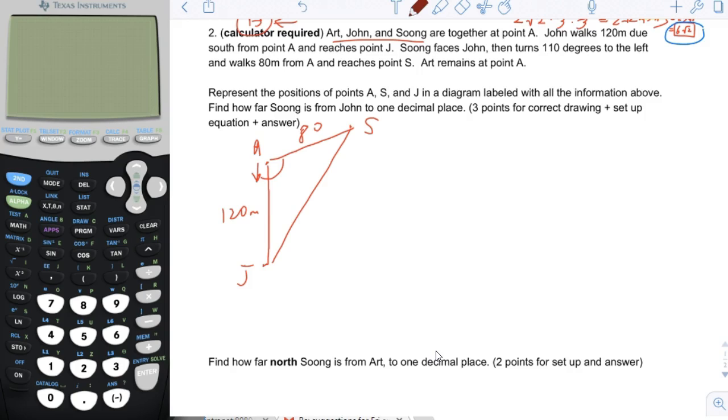Represent the points A, S, and J in the diagram labeled with all the information above. We just did that. Find how far Soong is from John to one decimal place. So basically we want to know the length of this side within one decimal place.